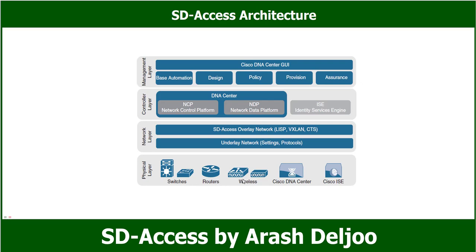In the physical layer, we can have multiple types of devices like switches, routers, wireless LAN controllers, lightweight access points, Cisco DNA Center, and Cisco ISE. All Cisco network devices that actively participate in the SD Access fabric must support all of the hardware ASICs — Application Specific Integrated Circuits — and FPGAs — Field Programmable Gate Arrays — as well as software requirements.